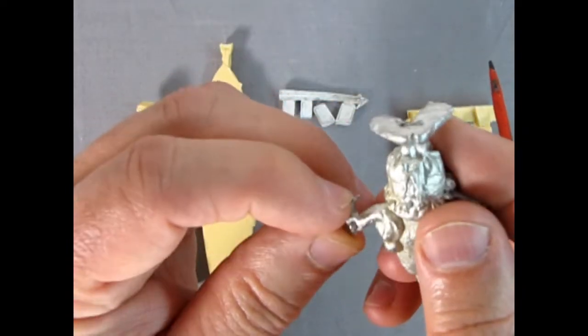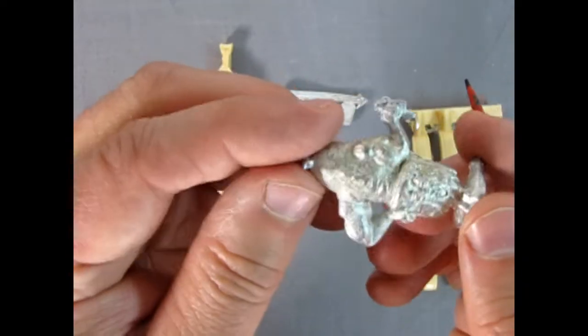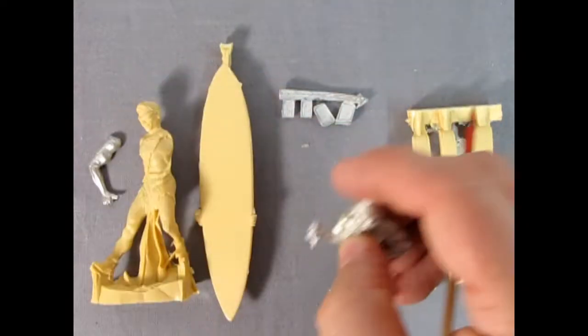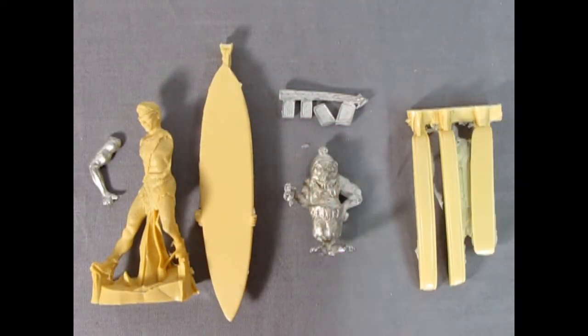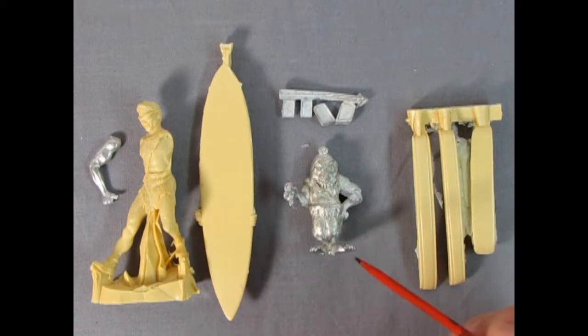You also have to get rid of these little whiskers that are on some of the components. That's the way white metal is actually cast. I've done a lot of white metal models with the Games Workshop pieces but never quite this one.